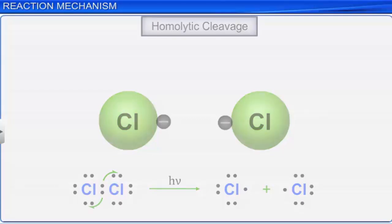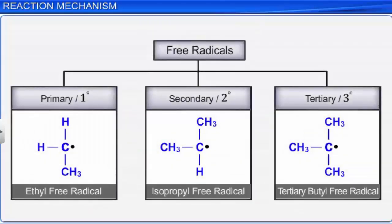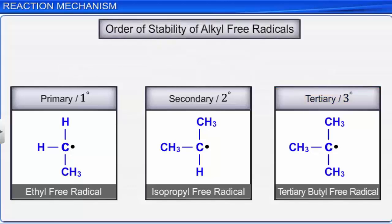Depending on the number of alkyl groups directly attached to the carbon free radical, alkyl free radicals are classified as primary, secondary, and tertiary. Greater is the number of alkyl groups, greater is the stability. Hence, primary alkyl radicals are the least stable while tertiary radicals are the most stable.